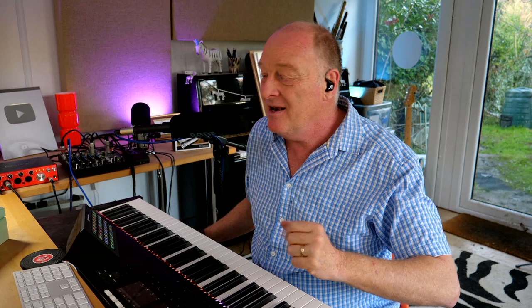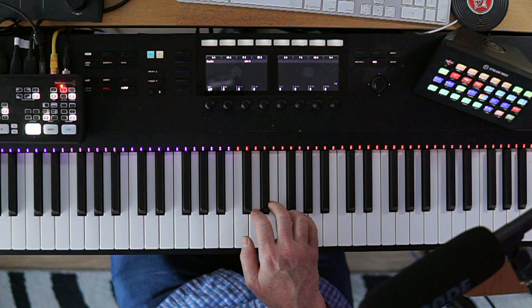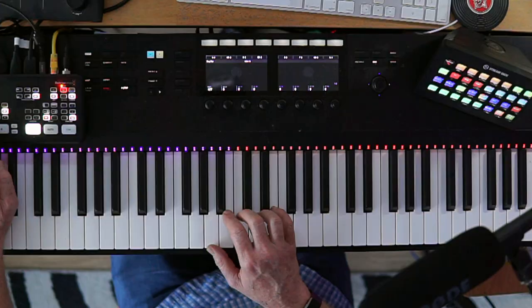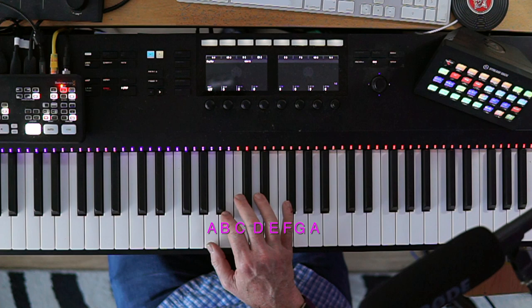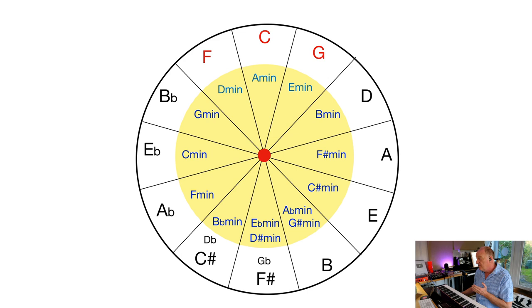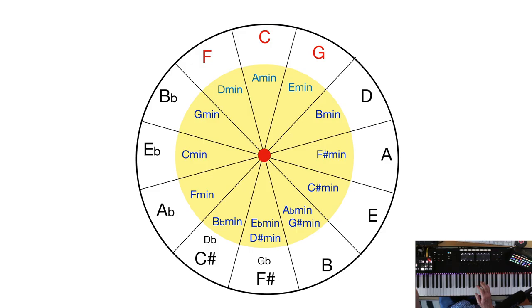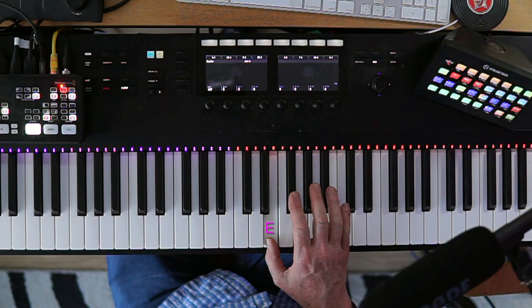A relative minor is a minor scale which shares the same notes as the major scale. So if you start with C major, what minor scale can you use which just uses the white notes? A minor. If you start on A, you can play a natural minor scale — they use exactly the same notes. And this happens all the way around the circle. So if we use the same notes as G major, we can play an E minor natural scale.